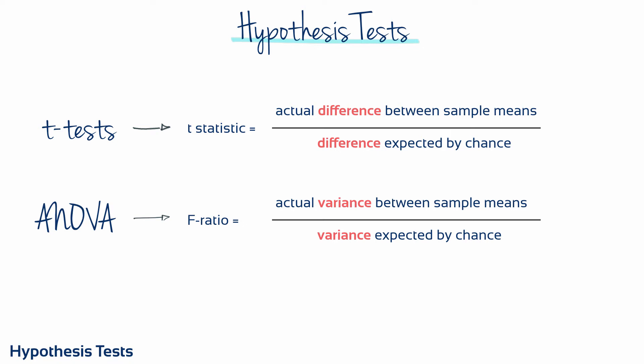T-tests quantify this as a single numerical value called a t-statistic. Whereas ANOVA is focused on comparing the extent of variance in sample means before and after an experimental intervention with the difference expected by chance alone — or in other words, did our manipulation of the independent variable cause the standard deviation of the dependent variable to increase, decrease, or stay the same? ANOVA quantifies this as a single numerical value called an F-ratio.